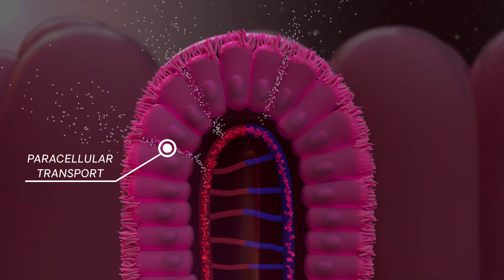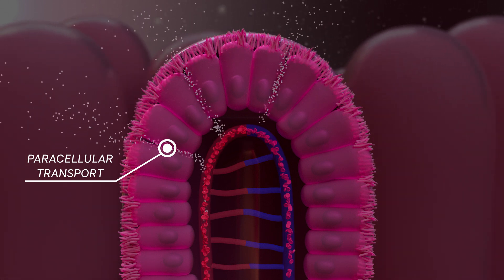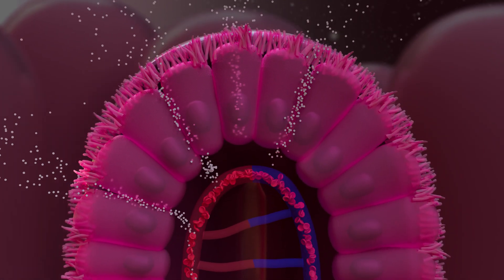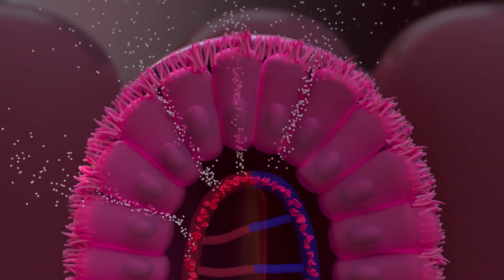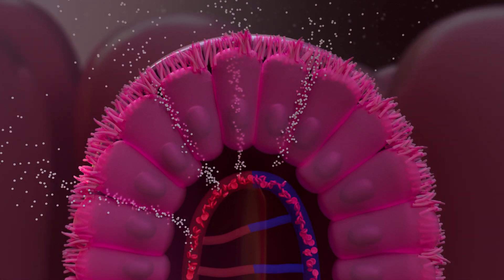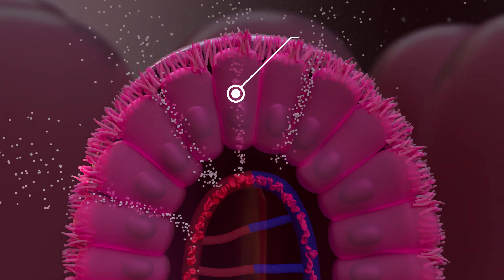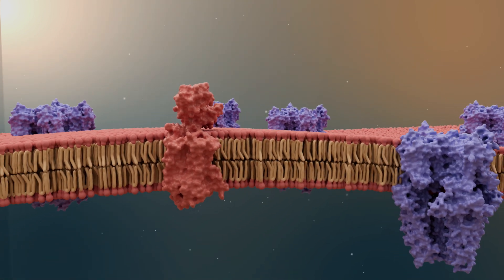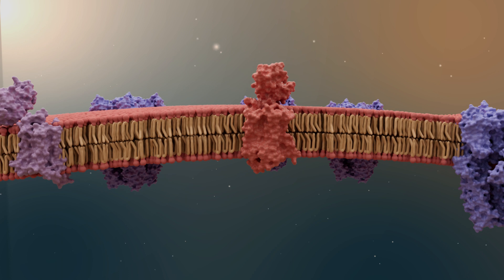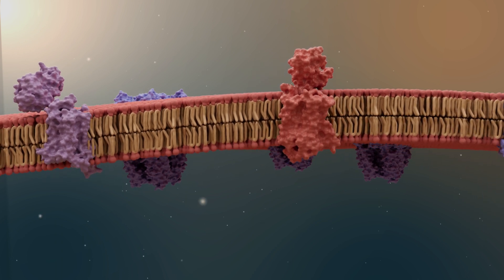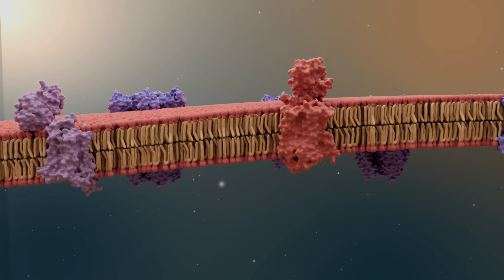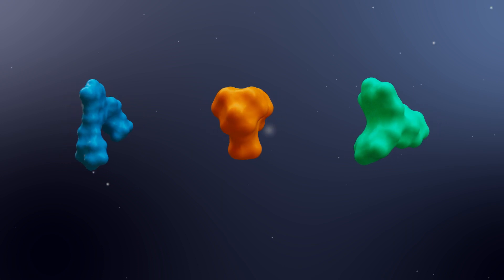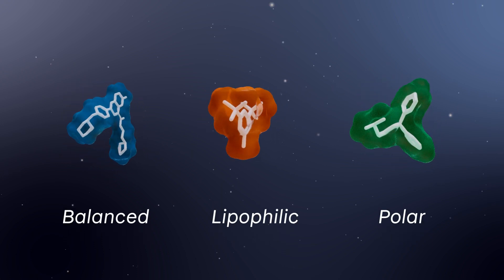This is referred to as paracellular transport. For paracellular transport to occur, the compound needs to be small and polar. Another way a drug can be transported is by passing through the cell membrane of the epithelial cells, known as transcellular transport. The cell membrane is made of a phospholipid bilayer, a thin polar membrane made of two layers of lipid molecules that acts as a barrier and selectively controls the passage of certain substances into and out of the cells. To successfully pass through the bilayer, a compound needs to have the right chemical properties.